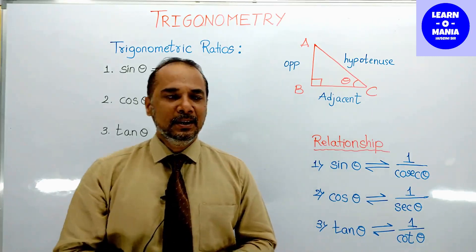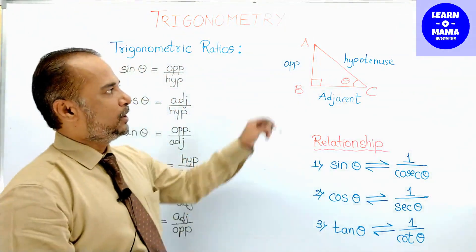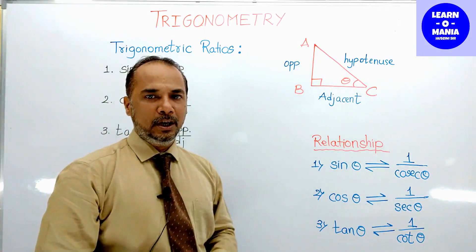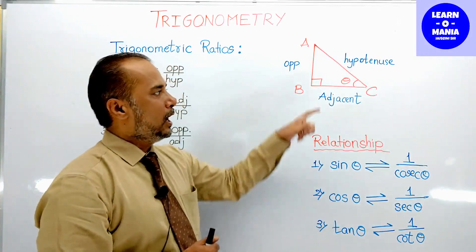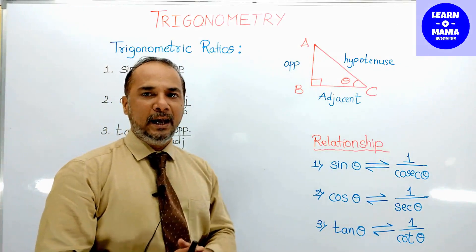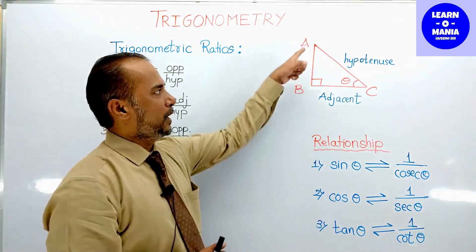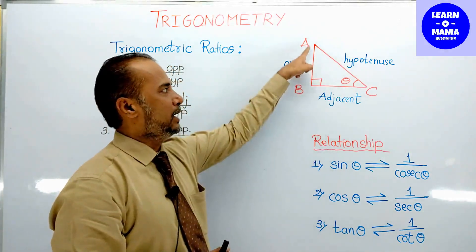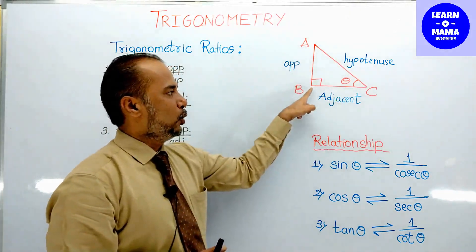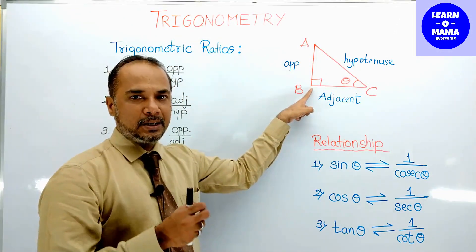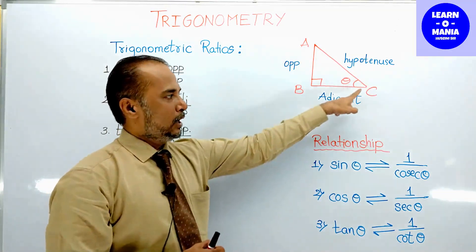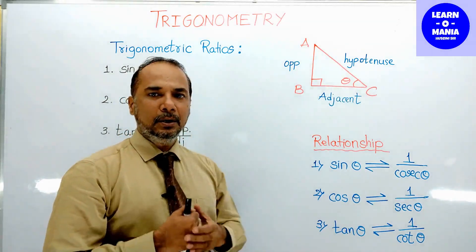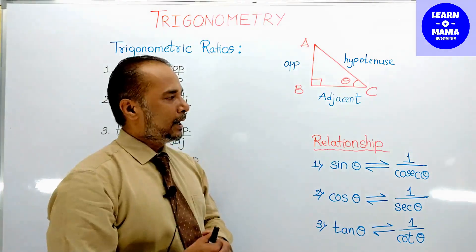First of all, in trigonometry we will use a right angle triangle. For example, I have a right angle triangle A, B, C with angle B equal to 90 degrees — a right angle. And let angle C measure theta degrees.